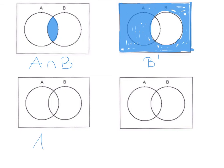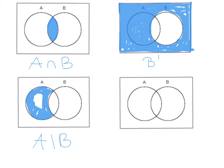Let's try A minus B — everything in A but not in B. We need to take the intersection part out, so just shade this part: everything in A but not in B.